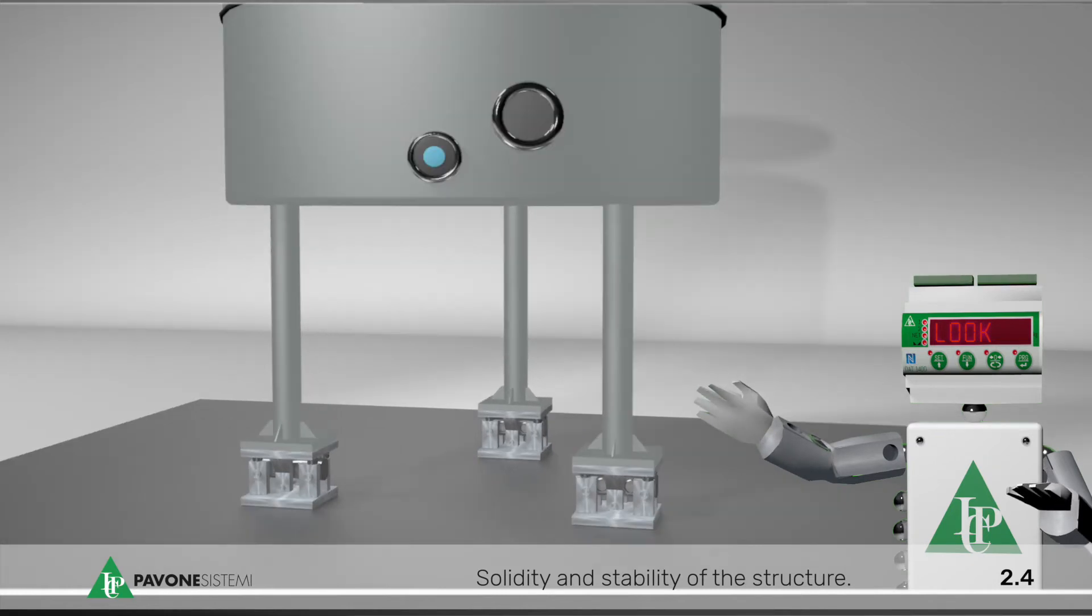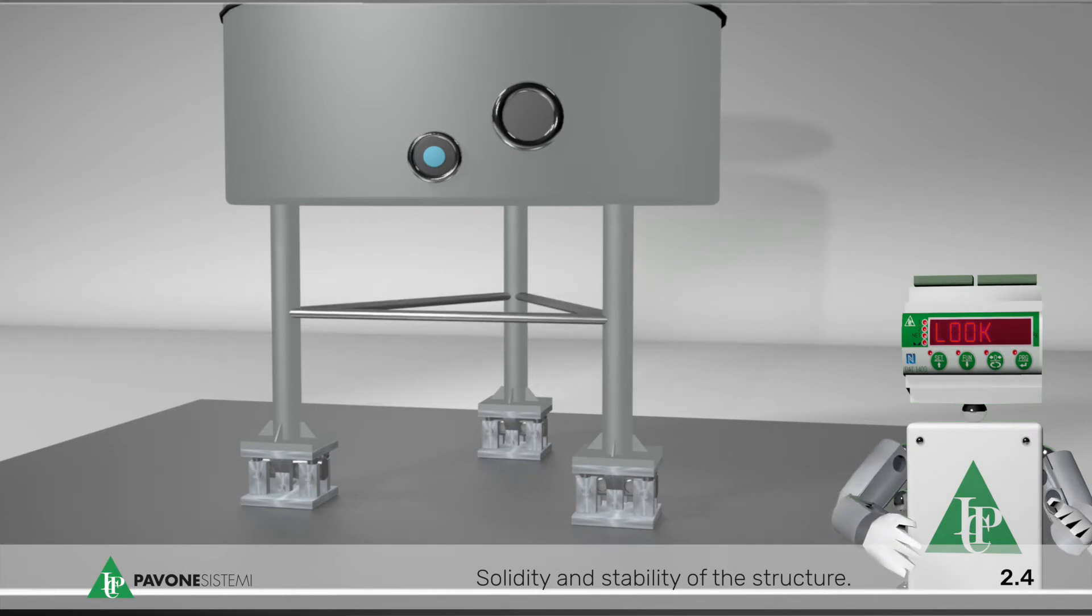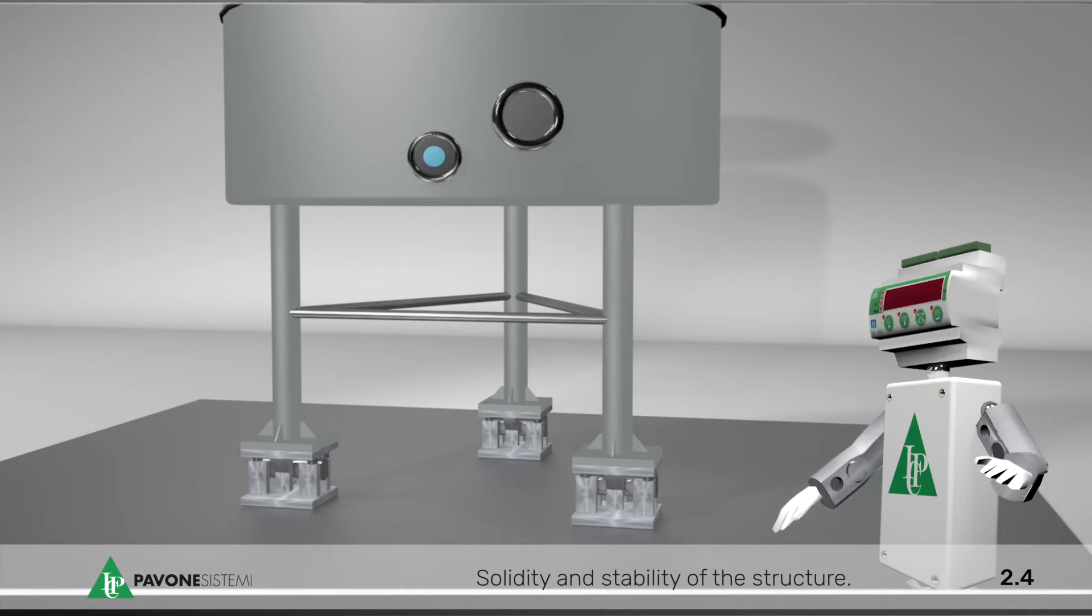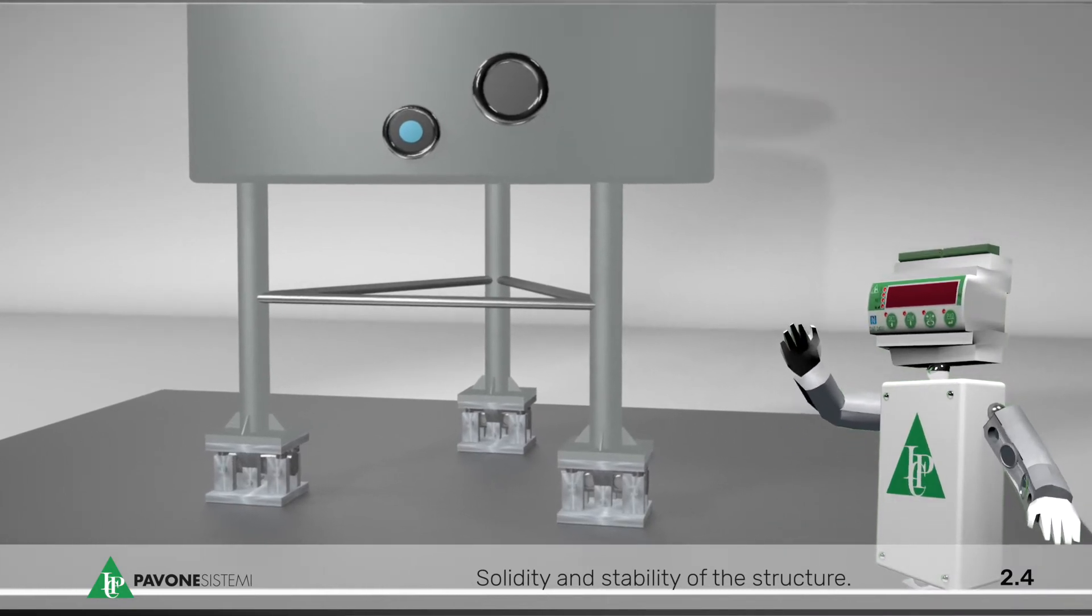The structure must be sufficiently solid and stable in order to guarantee correct weighing. For this reason, we recommend to provide connecting bars of adequate size, if needed, in order to optimize the mechanical function of our system.